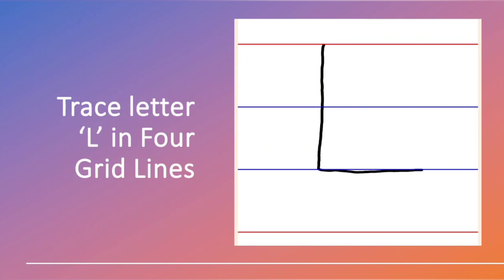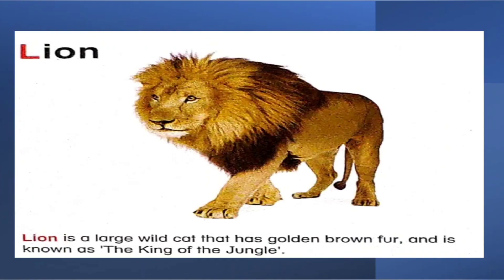Now, we will see words with the letter L. The first one, L for lion. You know this very well. It's a wild animal, right? And it is the king of the jungle. And it's very cruel.